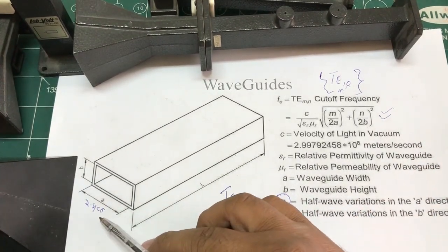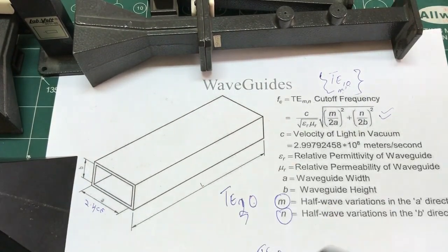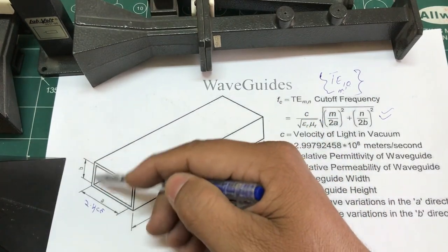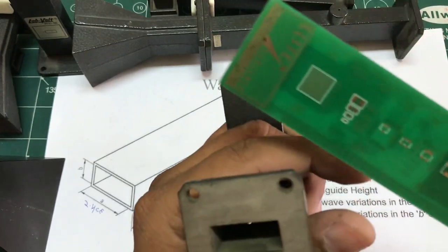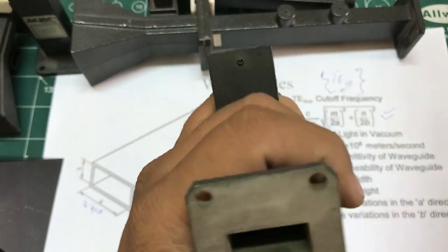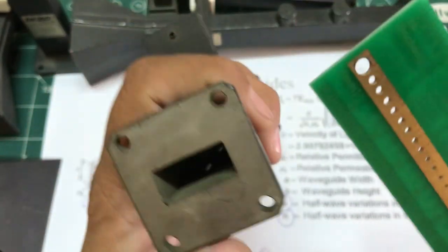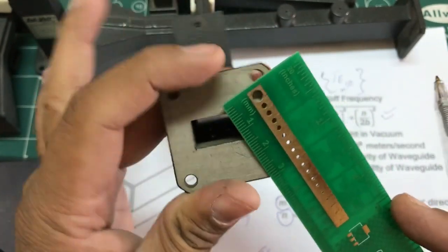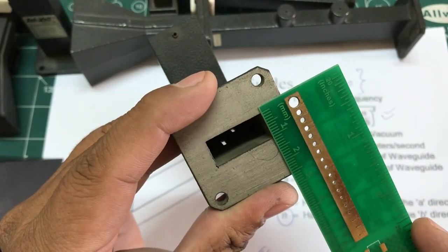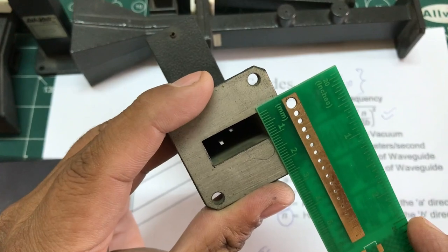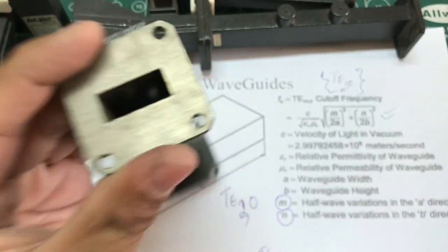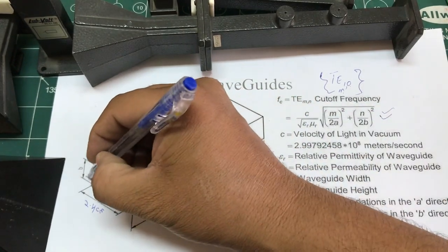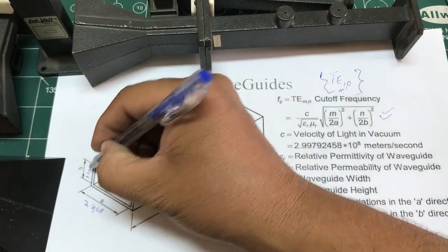This turns out to be 2.4 centimeters. Now I need to calculate my b which is right here. In order for me to calculate my b I'm going to use my ruler and look at my b. That b turns out to be around 1.1 centimeters, so this turns out to be 1.1 centimeters.